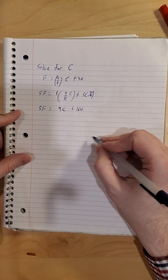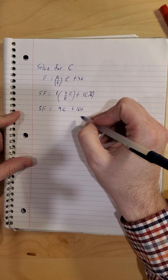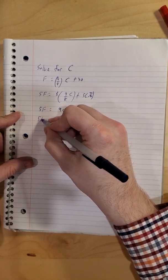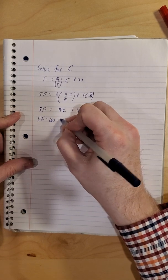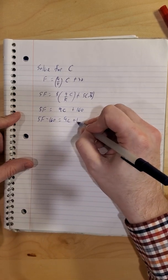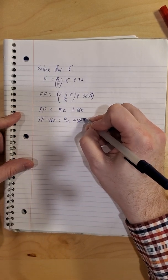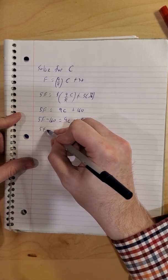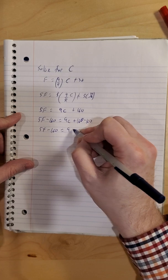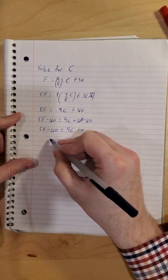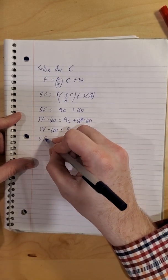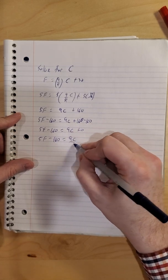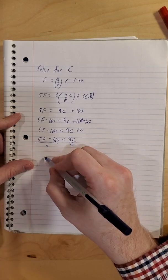Our goal is to get C by itself, so we'll subtract 160 on both sides next. So five F minus 160 is worth nine times C plus zero, and we'll get rid of that plus zero.